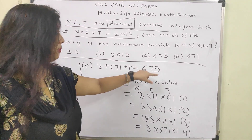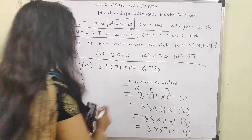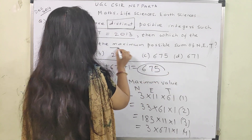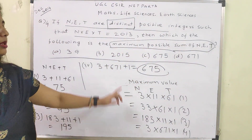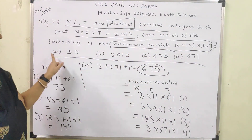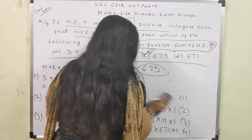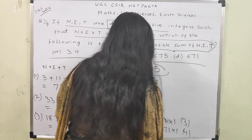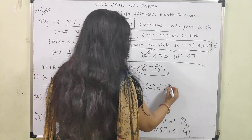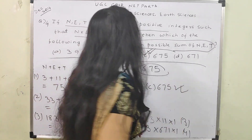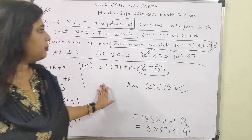Out of these 4 values, which is the maximum? 675 is the biggest quantity. The question asked about the maximum possible sum of N, E, T. There are 4 possibilities but the maximum one is 675, which is available as option C. The final answer is option C = 675. No number is repeated — the values must be distinct.